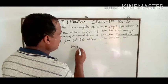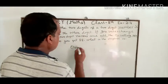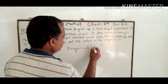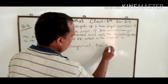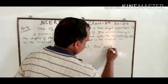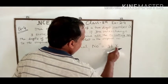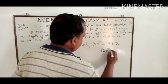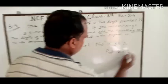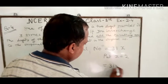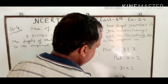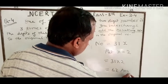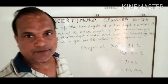From 44x equals 88, we get x equals 2. Now the original number equals 31x. Putting x equal to 2, we get 31 multiplied by 2, which is 62. So 62 is the answer to question number 4. Thank you.